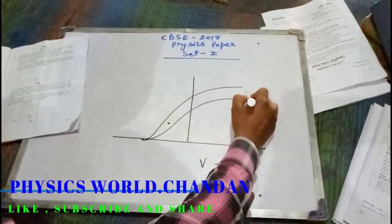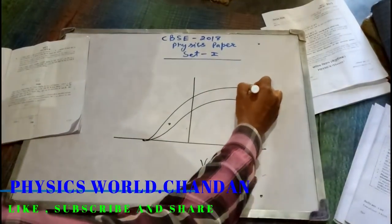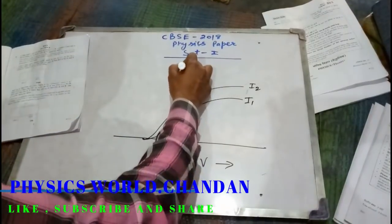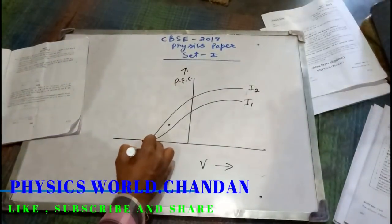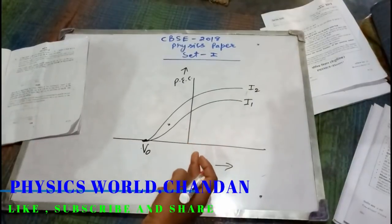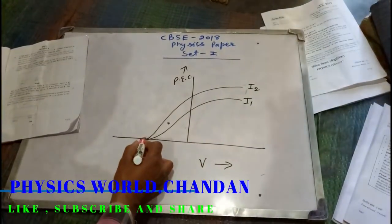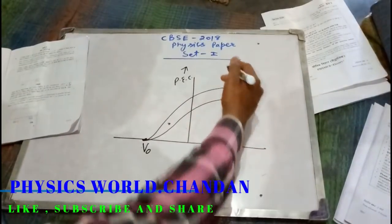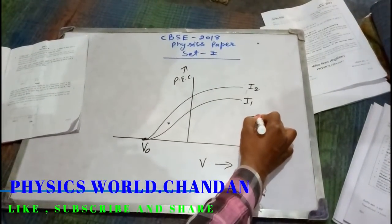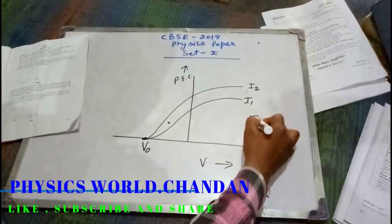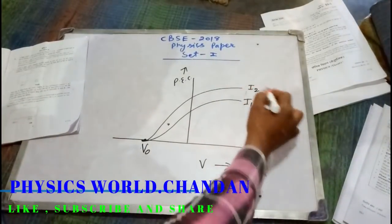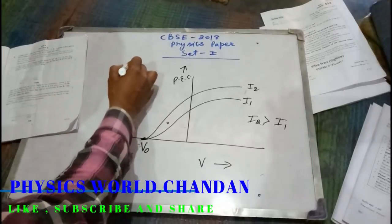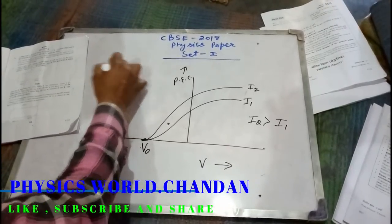With different intensities I1 and I2, photoelectric current plotted against applied voltage. Stopping voltage — kyunki dono radiations ki frequency same hai, isliye unka stopping potential same hoga. But inki intensity alag alag hai, isliye inka saturation current alag alag hoga. Aur jiska saturation current zyada hoga uski intensity zyada hogi, means intensity I2 is greater than intensity I1.